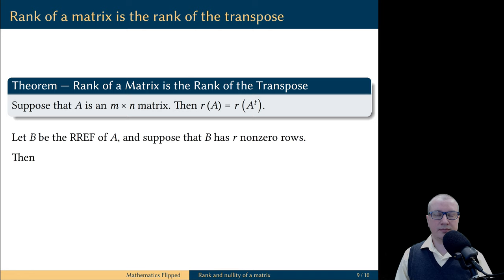Then we know that the rank of A, which is the dimension of the column space, is equal to that number R, because at the same time it is also the number of pivot columns in the reduced matrix.